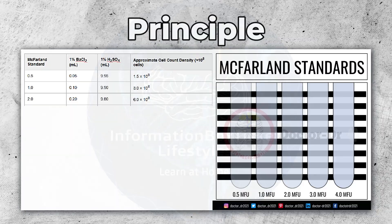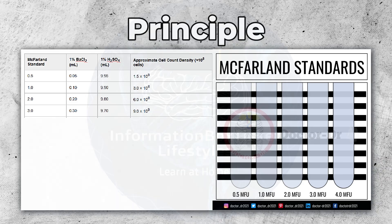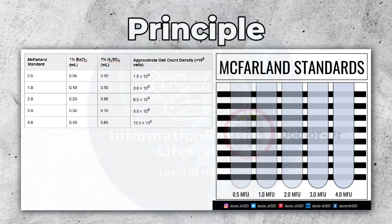McFarland Standard 2.0: mix 0.20 milliliters of 1% barium chloride with 9.80 milliliters of 1% sulfuric acid, corresponding to approximately 6.0 × 10⁸ cells. McFarland Standard 3.0: mix 0.30 milliliters of 1% barium chloride with 9.70 milliliters of 1% sulfuric acid, corresponding to approximately 9.0 × 10⁸ cells. McFarland Standard 4.0: mix 0.40 milliliters of 1% barium chloride with 9.60 milliliters of 1% sulfuric acid, corresponding to approximately 12.0 × 10⁸ cells.